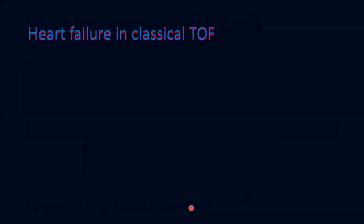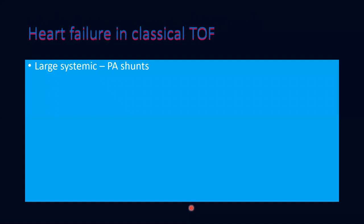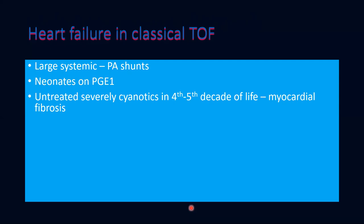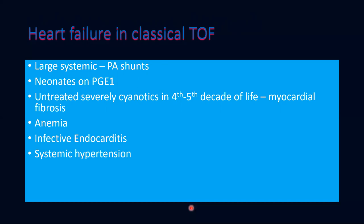When do you have heart failure in classical tetralogy — not the child with large VSD and minimal obstruction, but one with significant RVOT obstruction? Heart failure is usually seen when a large systemic-to-PA shunt has been performed, in neonates on prostaglandins, or in untreated severely cyanotic individuals in late age with myocardial fibrosis and LV dysfunction. Anemia, infective endocarditis, systemic hypertension, aortic regurgitation, and unrelated myocarditis can also tilt the patient into heart failure in tetralogy.